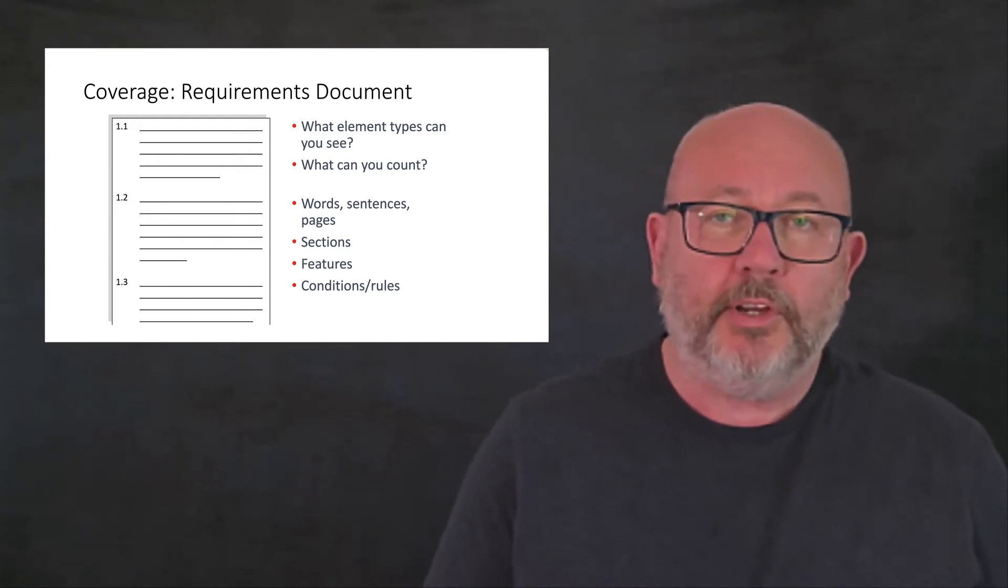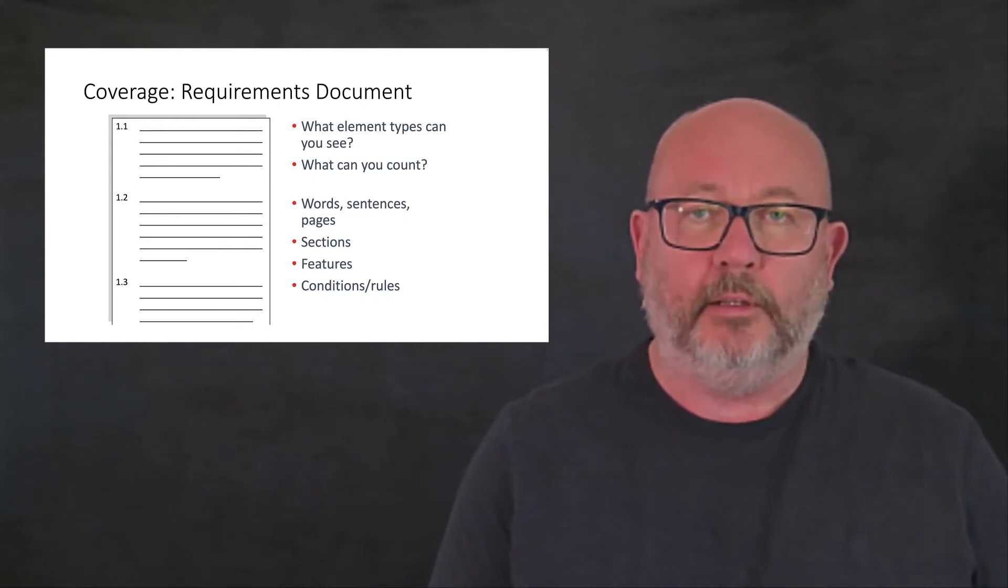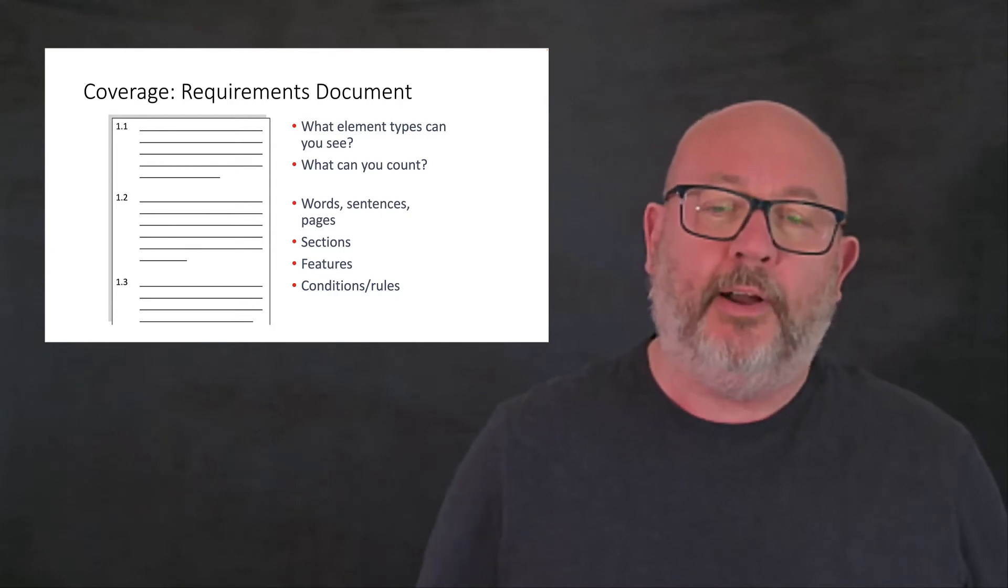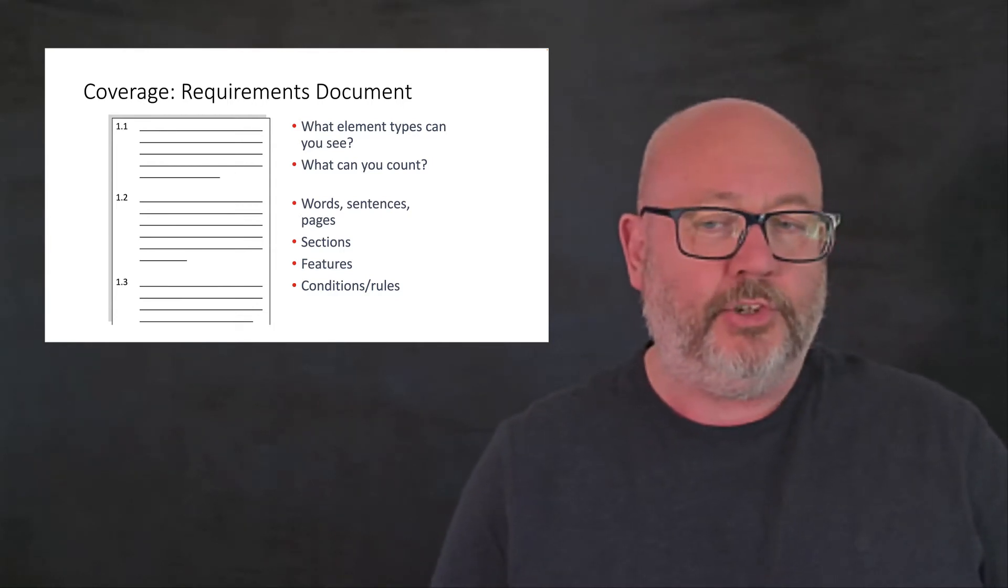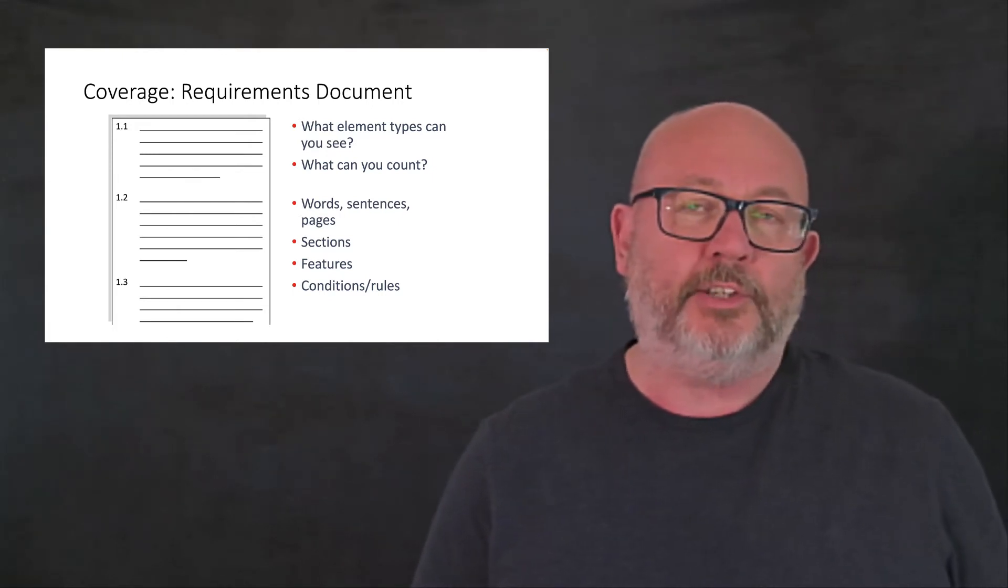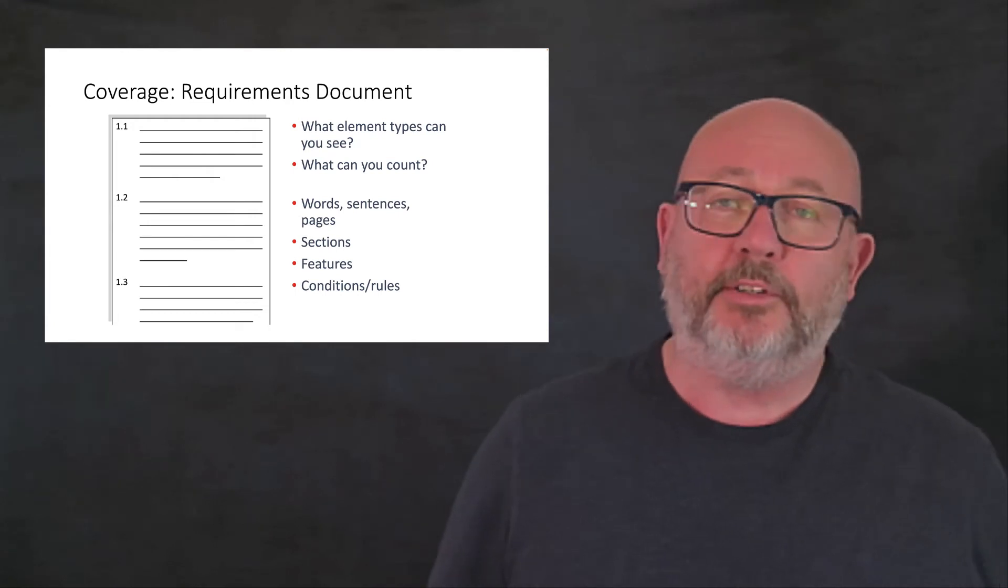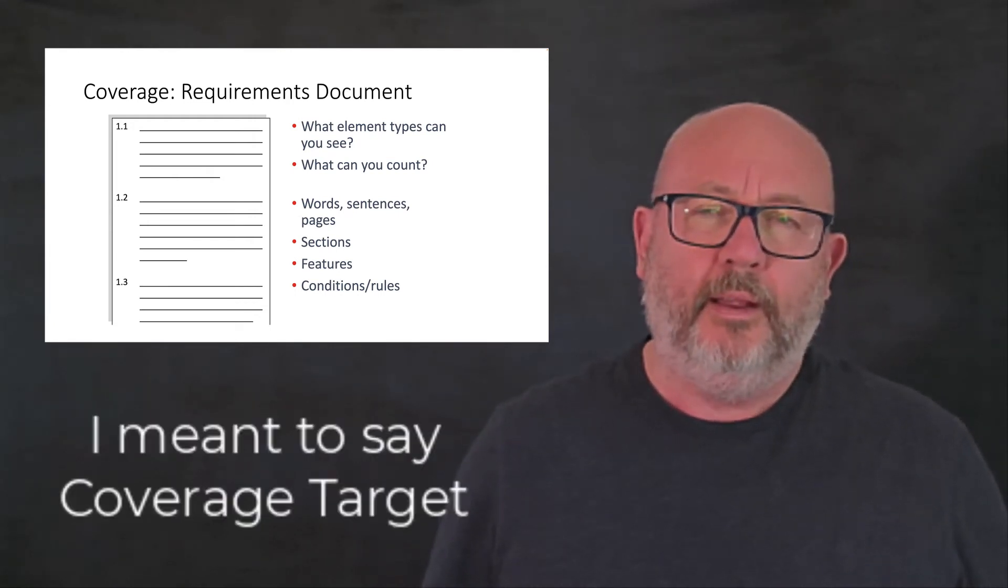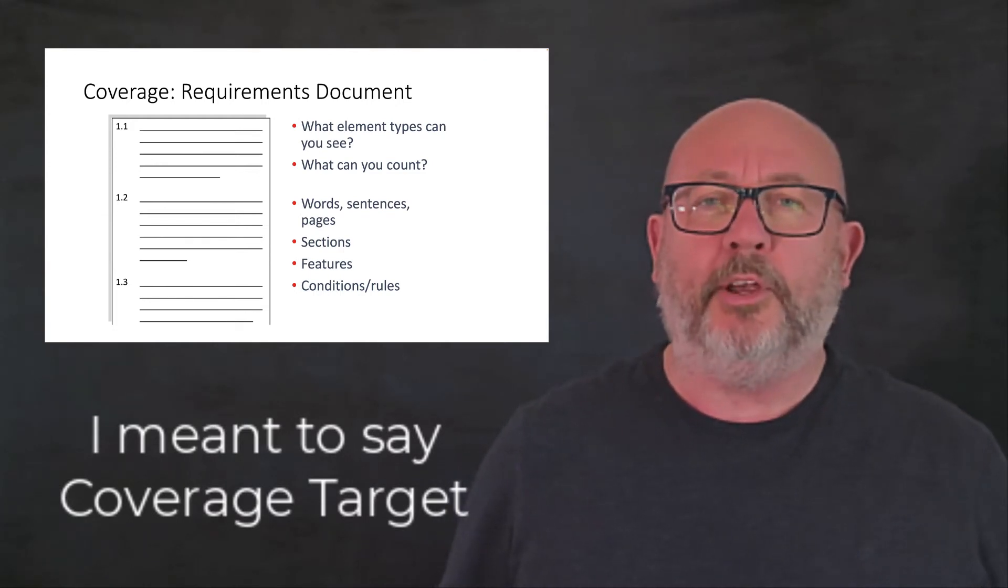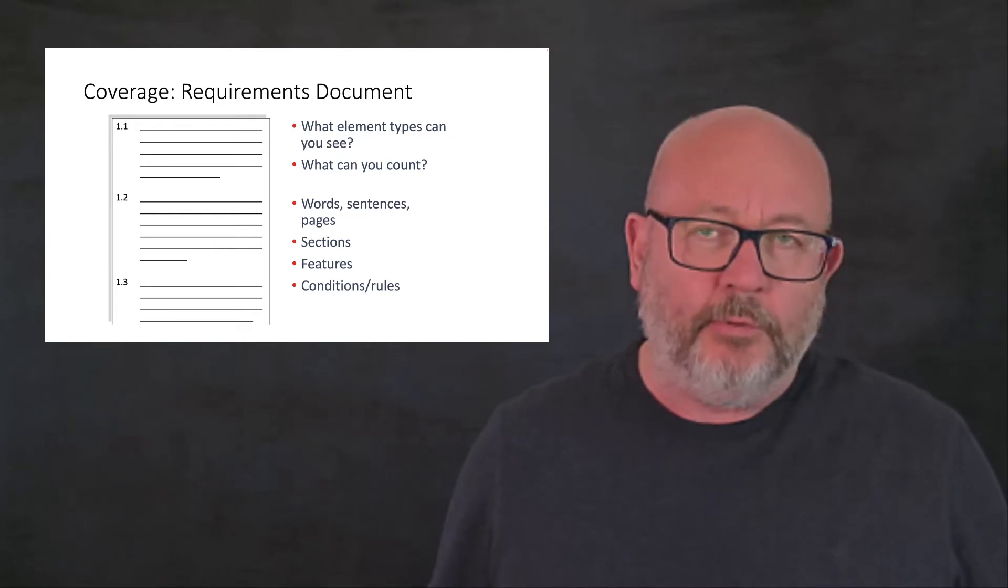A requirements document is a rich source of information and it is a model, but we might choose to simplify requirements by identifying sections, features, conditions or rules. What we can do is we can define a coverage target such as all sections coverage, one test per requirements document section. Now, that might not be a good requirements target. So, probably we would look at features and maybe look at individual conditions or rules in a real situation.